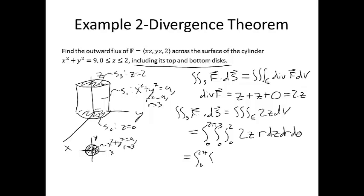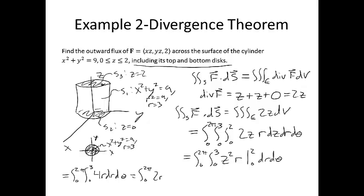Evaluating the triple integral: the integral from 0 to 2pi, the integral from 0 to 3, of z squared r evaluated from 0 to 2 dr d-theta gives us the integral from 0 to 2pi of the integral from 0 to 3 of 4r dr d-theta, which equals the integral from 0 to 2pi of 2r squared from 0 to 3 d-theta, giving the integral from 0 to 2pi of 18 d-theta, which equals 36 pi. That's our final answer.